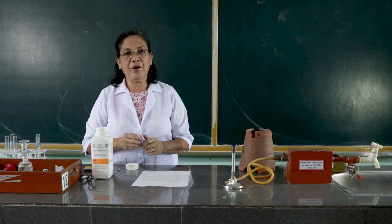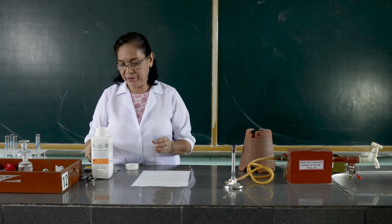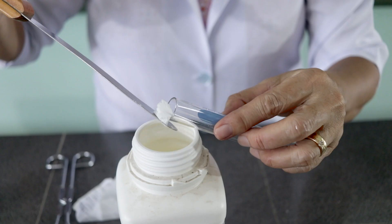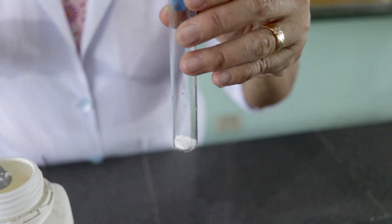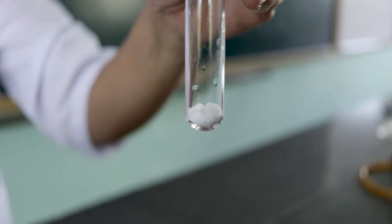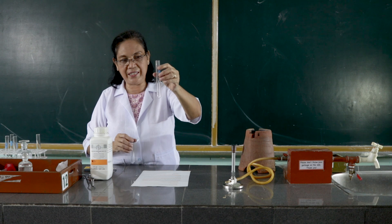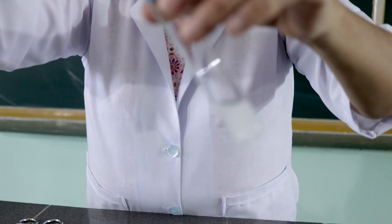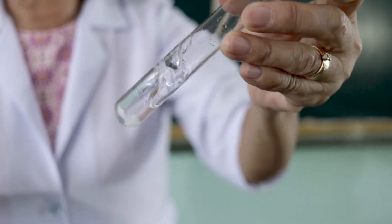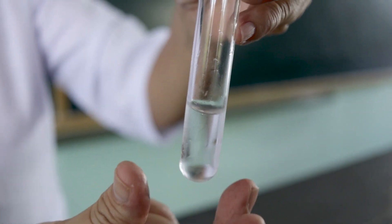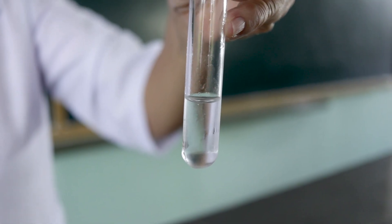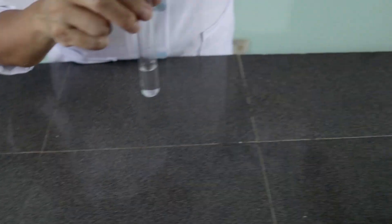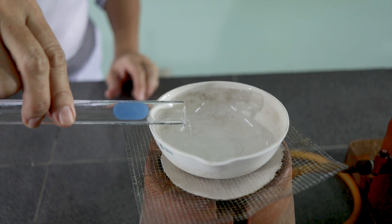In procedure number five, we are asked to dissolve the ammonium chloride crystals in water. Let's get some amount of the ammonium chloride crystals. Observe its color and state. Then we are going to add water into these ammonium chloride crystals and observe what happens. Then we are going to evaporate this to dryness and observe what happens.